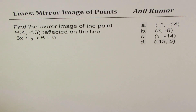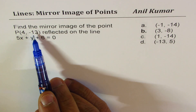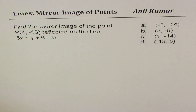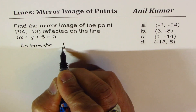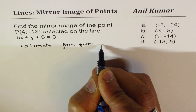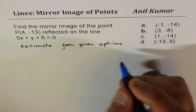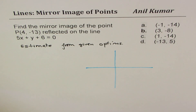Now the last question is a tricky one. We have to find the mirror image of point P (4, -13) reflected on the line 5x + y + 6 = 0. Choices are given. Here, we are going to estimate the answer from the given options rather than calculate it. In another set of videos, I will teach you how to find the mirror image of points when reflected on lines with different slopes.